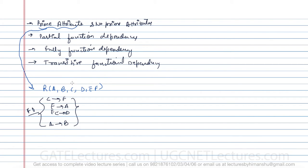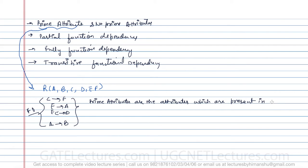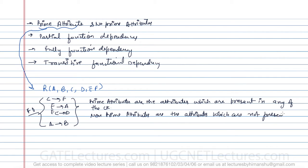Prime attributes are the attributes which are present in any of the candidate keys. Non-prime attributes are the attributes which are not present in any of the candidate key.